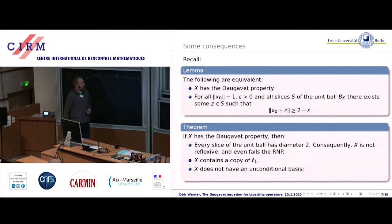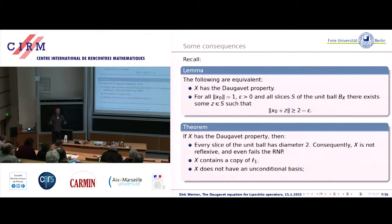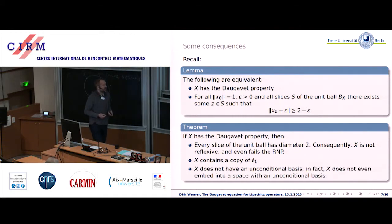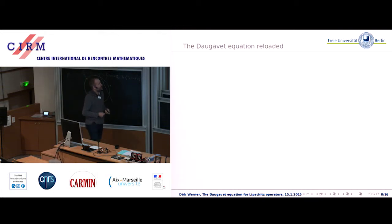Vova Kadets was interested in all these investigations to prove this theorem. This is a unified approach to the theorem due to Pashinsky that neither C[0,1] nor L1[0,1] have unconditional bases. Both spaces have the Daugavet property and he proved that a space with the Daugavet property doesn't have an unconditional basis. Then we asked ourselves, can't we go one step further because these classical spaces not only do they not have an unconditional basis, they do not even embed into a space with an unconditional basis, and this can be proved as well on this basis.